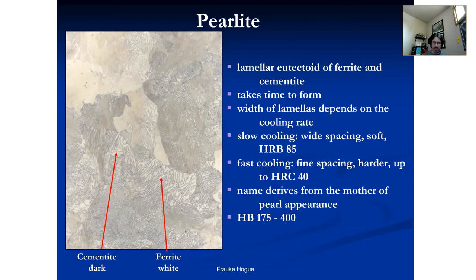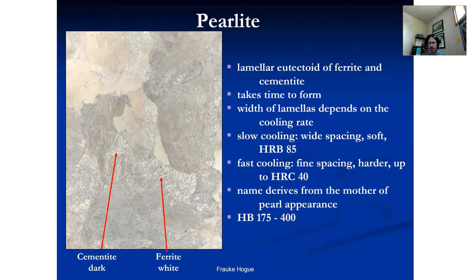Ferrite is generally the lighter phase in iron-carbon micrographs. Pearlite takes a little bit of time to form — slow cooling rate — and changes the hardness and also the spacing of the lamellae. The name derives from the mother-of-pearl appearance it exhibits. Pearlite has a lamellar structure. There's a lot of cool stuff in the metal world — the story of Damascus swords gets this lamellar structure, and it's a very beautiful example of metalsmithing with this kind of cool microstructure showing two different phases.